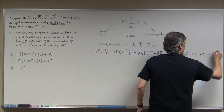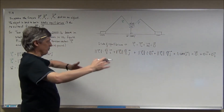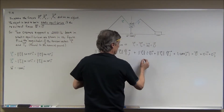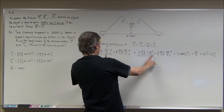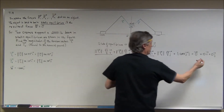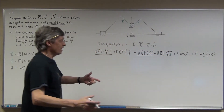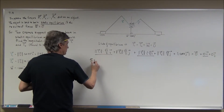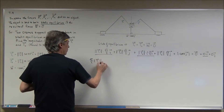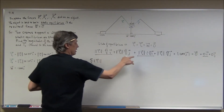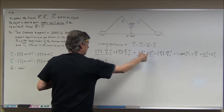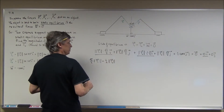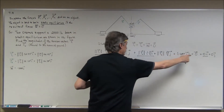This is where you do a like-term thing. These terms here are in terms of vector i, and over here this term is also in terms of vector i. So it's like setting the coefficients equal to one another. I have the square root of 2 over 2 times the magnitude of vector T sub 1 minus one half times the magnitude of vector T sub 2, equal to zero.